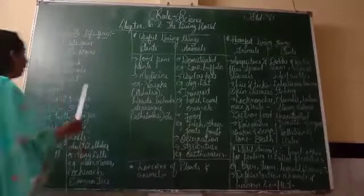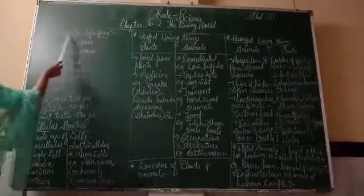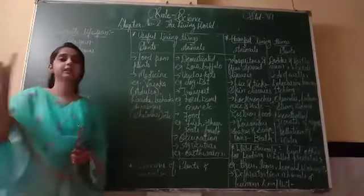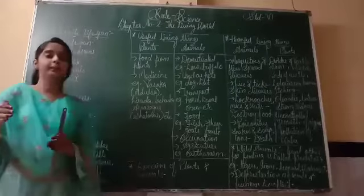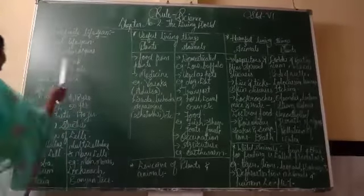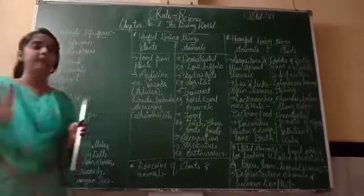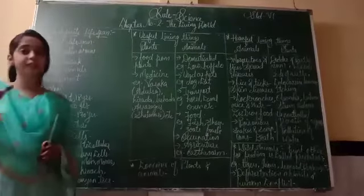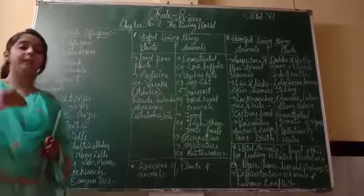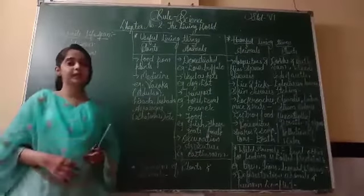Now let us start the new point, that is a definite life span. What is the meaning of definite? Definite means a certain fixed time. Every human being has a certain fixed time of life — that is a fixed life span. Every living thing has an expiry date.